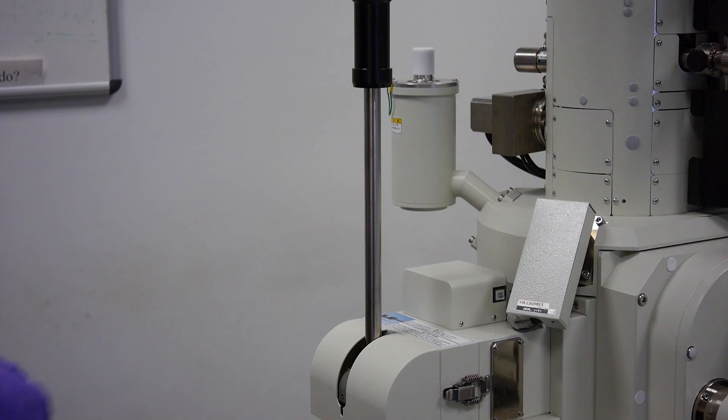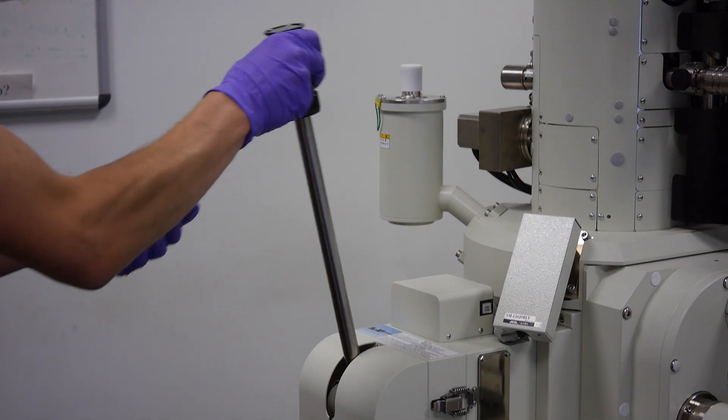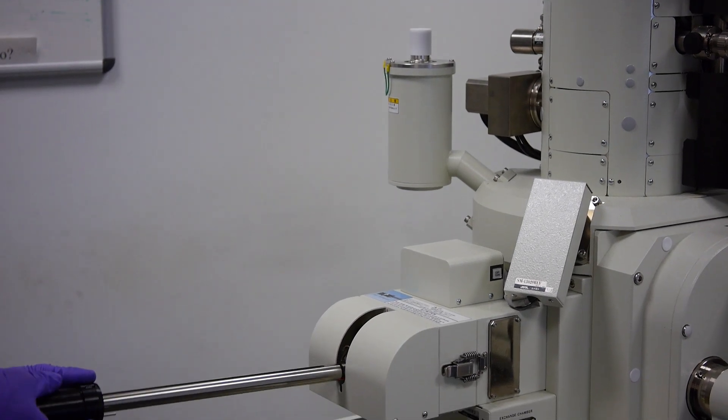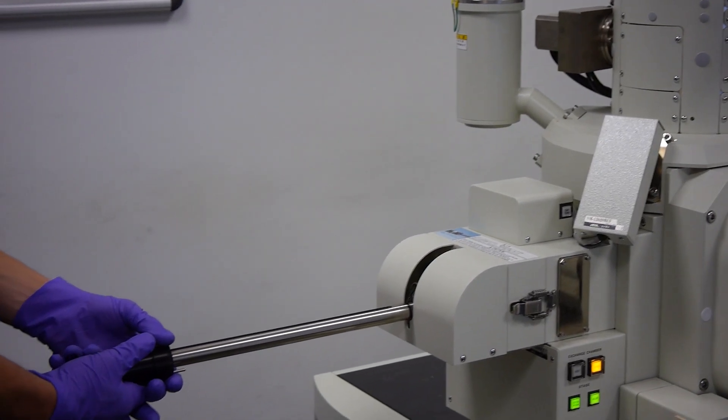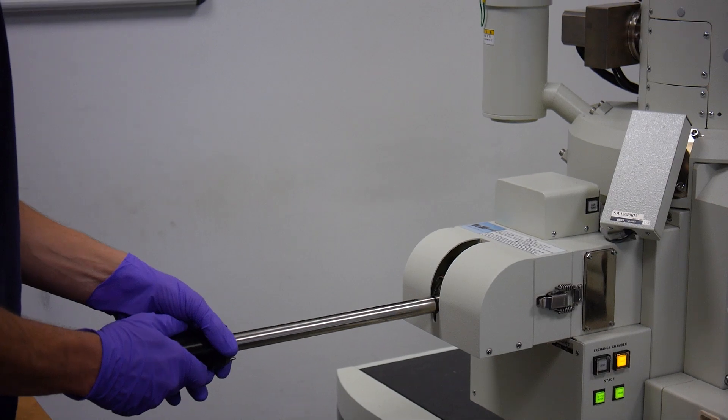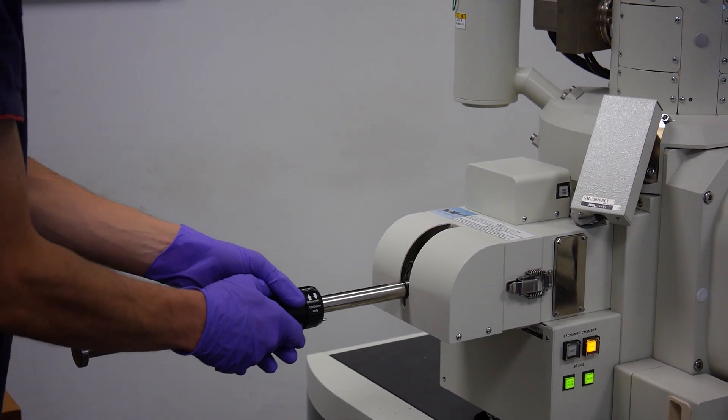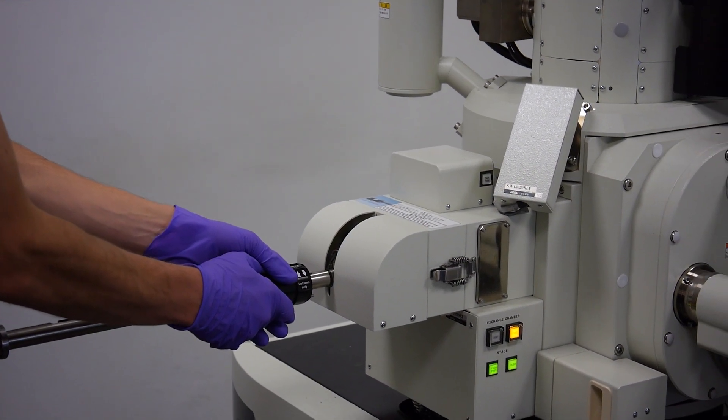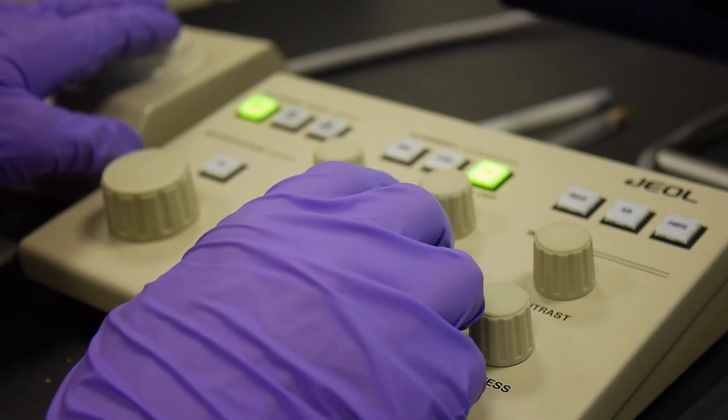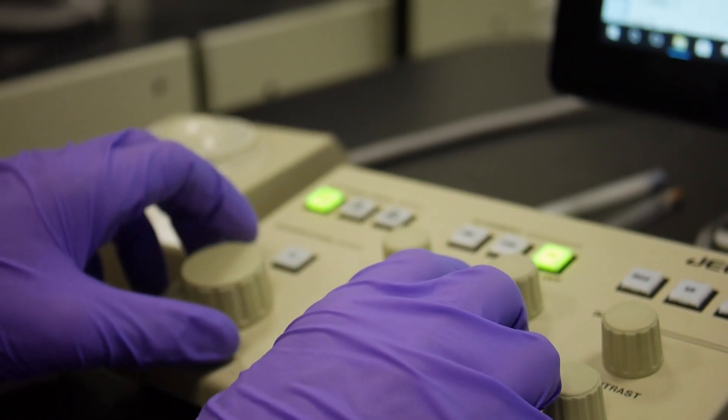These microscopes operate under an ultra-high vacuum and having to pump down to these levels takes time. This microscope makes use of an exchange chamber, so less air has to be pumped out of the microscope after the sample is loaded. A push rod is used to move the sample from the exchange chamber to the imaging chamber.